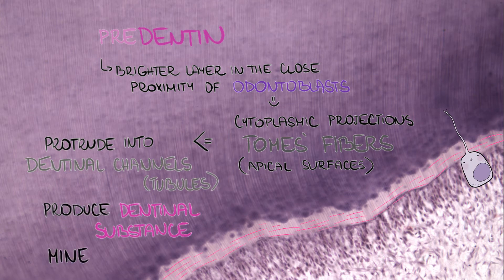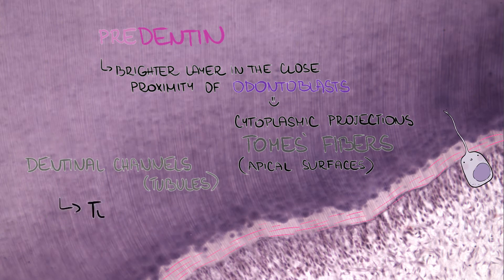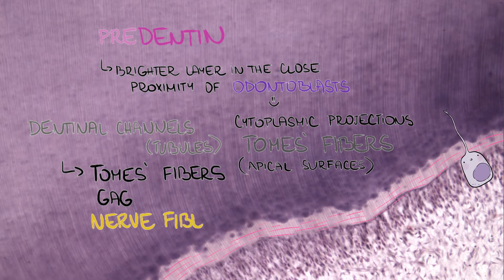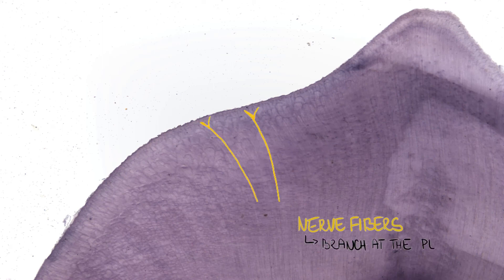Apart from Tomes fibers, dentinal tubules also contain glycosaminoglycans and nerve fibers protruding from the pulp. Nerve fibers branch at the periphery of dentin.